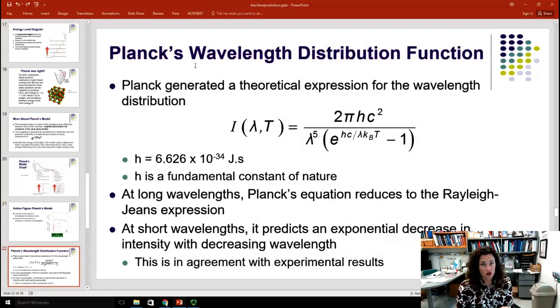The full description of the intensity of a blackbody radiator according to the wavelength is described this way. I is the intensity, it's a function of λ, the wavelength and temperature, and it's equal to 2πhc² over λ to the fifth, e to the hc over λkT minus 1. Here, h is Planck's constant. Planck's constant is 6.626 times 10^-34 joules seconds. He extracted this as a fit from the curve. We now know that it's a fundamental constant of nature, and it appears a lot in quantum mechanics.